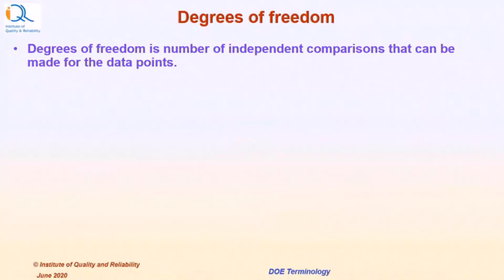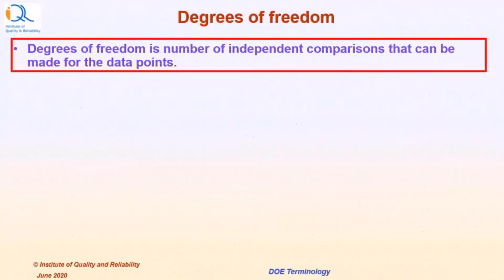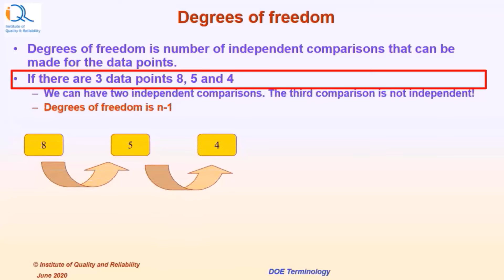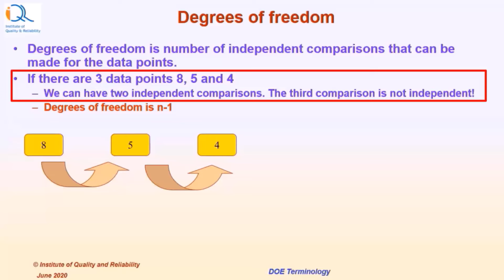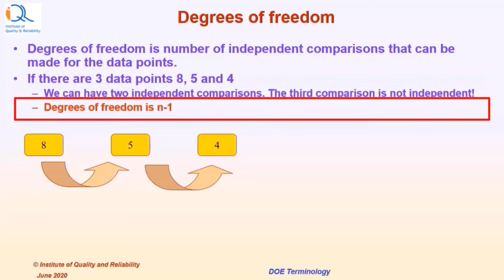Degrees of freedom is the number of independent comparisons that can be made from the data points. If there are three data points — for example 8, 5, and 4 — then we can have two independent comparisons. The third comparison is not independent. Therefore, we can say that the degrees of freedom is n minus 1.